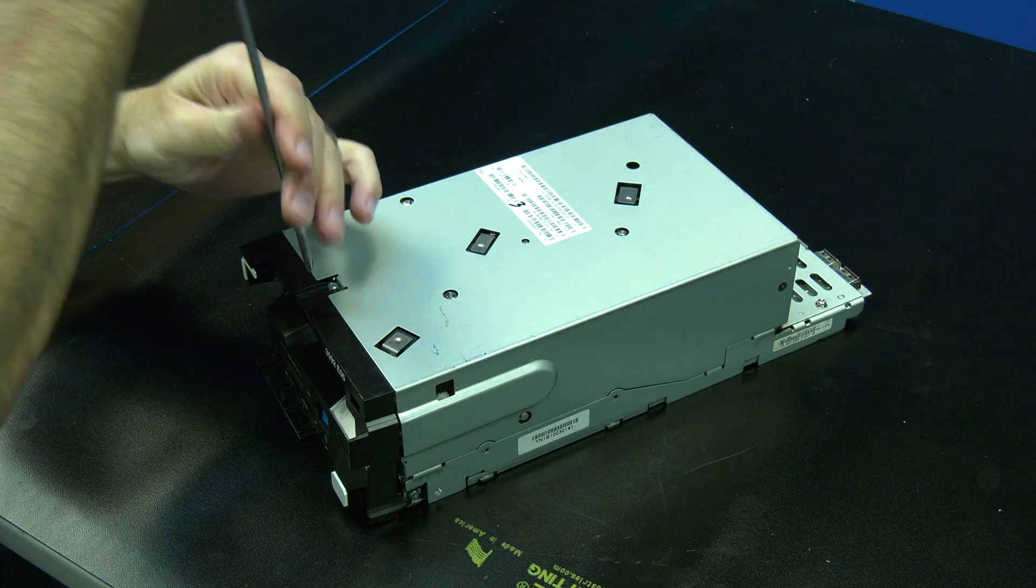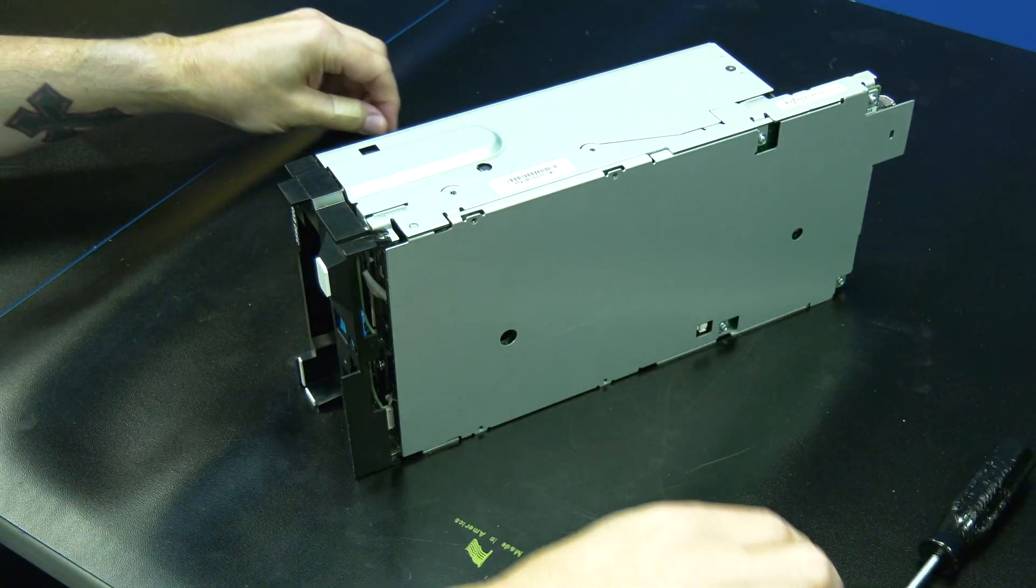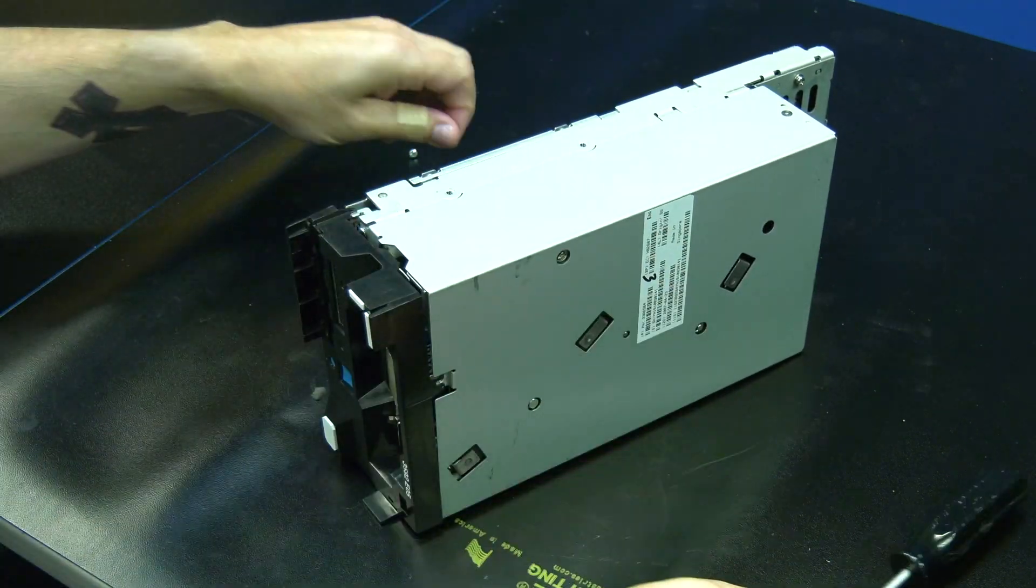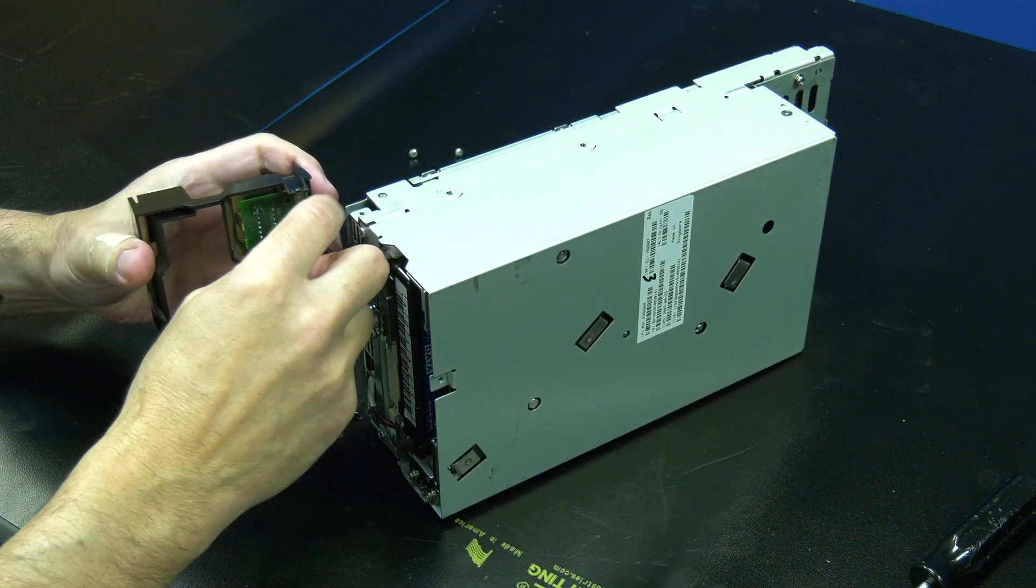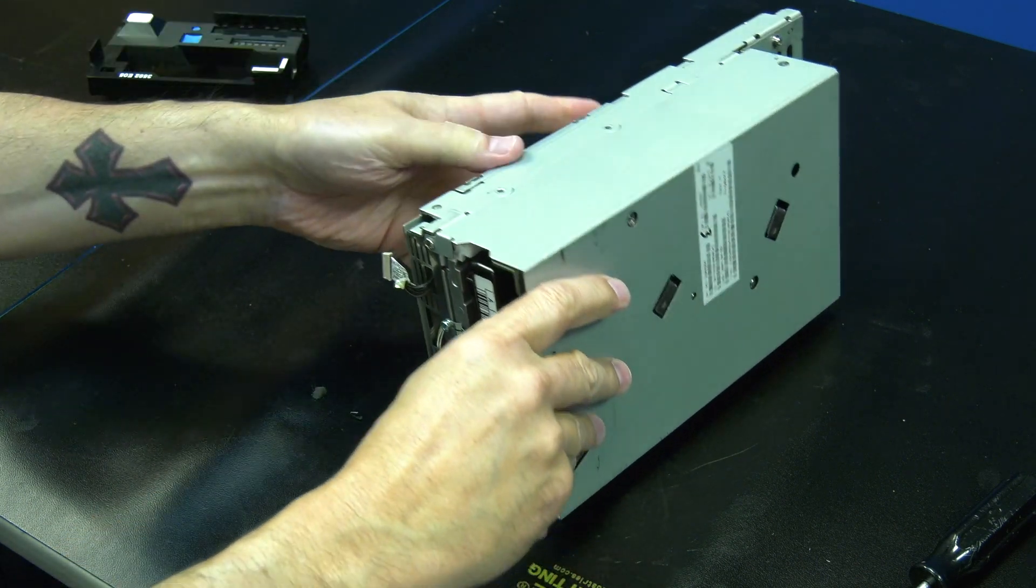You will start by using a Phillips head screwdriver to remove the three screws holding the front faceplate on. They are located on the top and two sides of the drive. Then, once the faceplate is loose, you will pull it forward and unplug the cable from the rear of the faceplate and set it to the side.